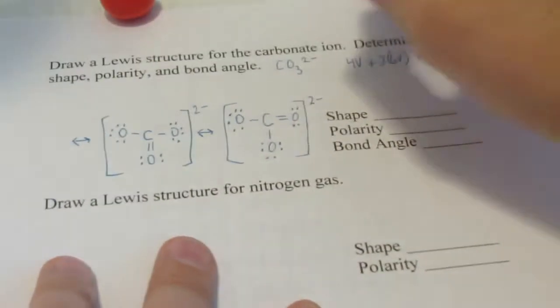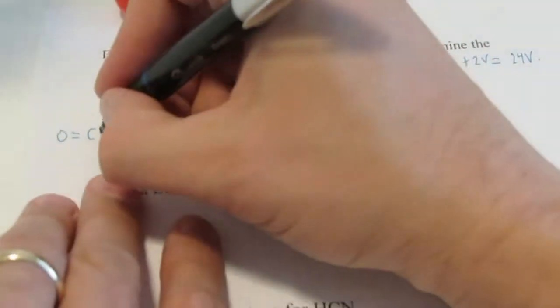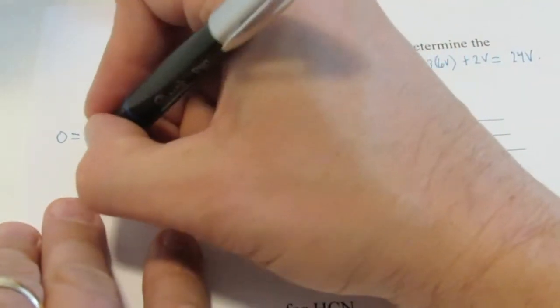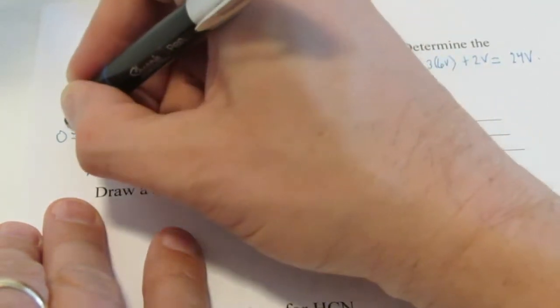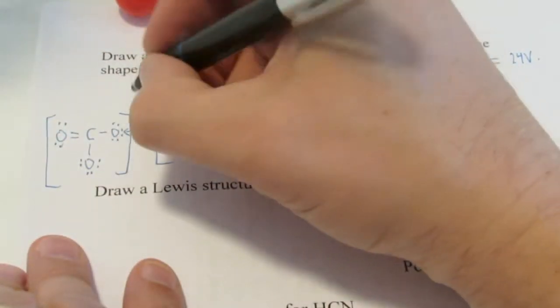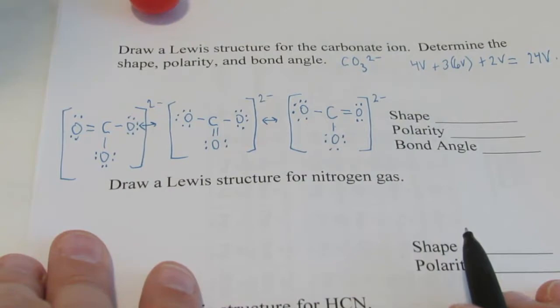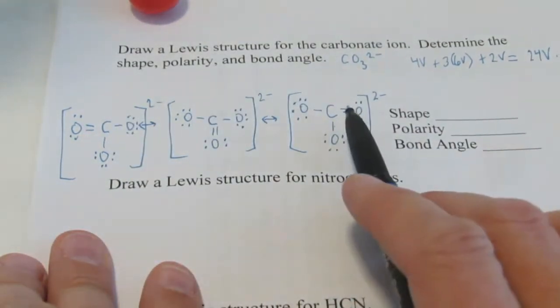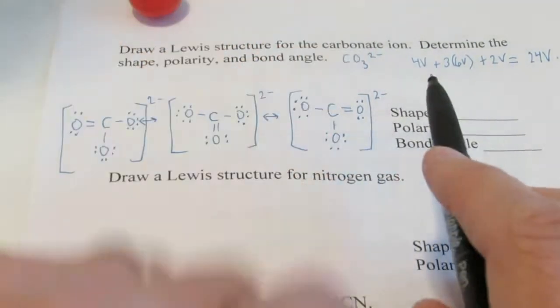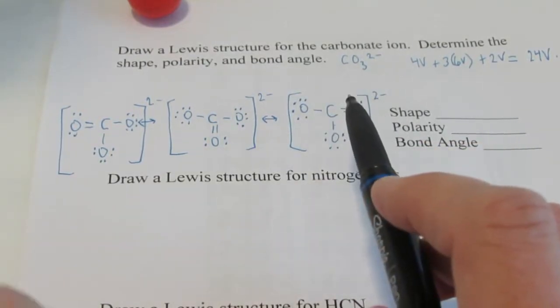We'll put brackets around that and call it two negative. And then one more. These are all equally correct Lewis structures. We'll put the double bonded oxygen to the left way over there. And single bond these other ones and complete their octets. And we'll put brackets around that and call it two negative. So this would be the appropriate Lewis structure for the carbonate ion. Did you all see that? We have the double bond shared equally in all three positions. So it's not one double and two singles. It's actually three one and a third bonds. Because that double bond is shared between three places.